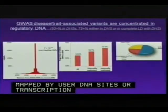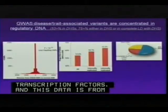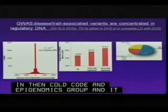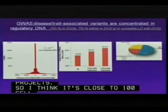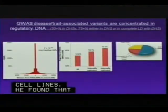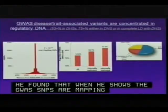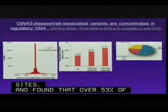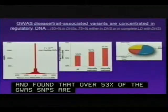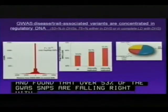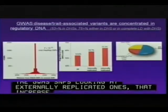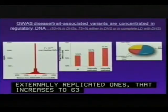This data is from John Stamatoyannopoulos, a PI in both the ENCODE and epigenomics groups. Across close to 100 cell lines, he found that GWAS SNPs map very closely to DNase hypersensitive sites. Over 53% of GWAS SNPs fall right within DNase hypersensitive sites. Looking at externally replicated GWAS SNPs, that number increases to 63%. And when considering SNPs in complete LD with DNase hypersensitive sites, 75% of all GWAS SNPs are actually mapping in DNase hypersensitive sites.